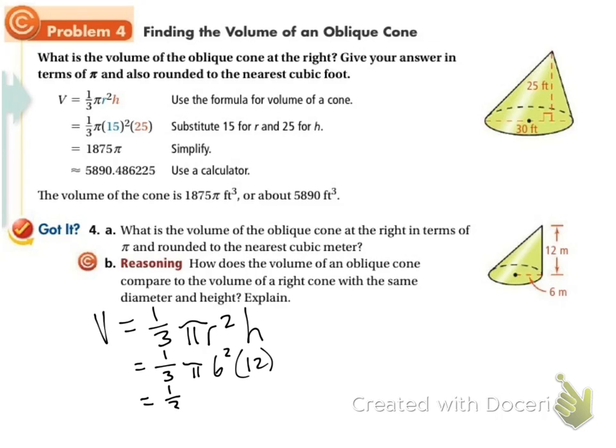This is 1 third times pi times 36 times 12. On my calculator, I'm going to do 36 times 12. And I'm going to divide it by 3. So, this is 144 pi. We're working in meters. So, meters cubed.